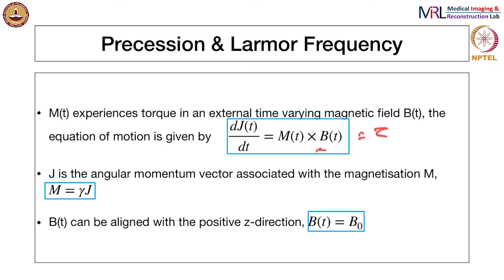This gives the equations of motion of the magnetization vector itself. We know J is the angular momentum vector associated with M, and M = gamma * J, so we can substitute there. We also know that B can always be aligned with the positive z-direction, so we write B = B0. This B0 is the static magnetic field. As applied in an MR scanner, it is quite homogeneous and does not vary with time.